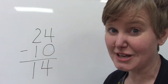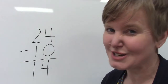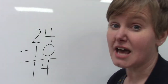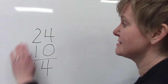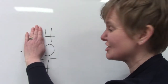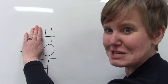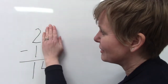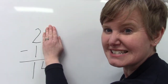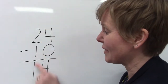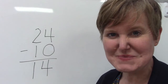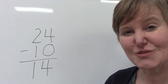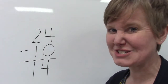One way that we can figure this out if we don't know the answer is we can look just at the ones place. We'll just look at 4 take away 0. And 4 take away 0 is 4. And then we look at the tens place. 2 take away 1 is 1. 24 take away 10 is 14.